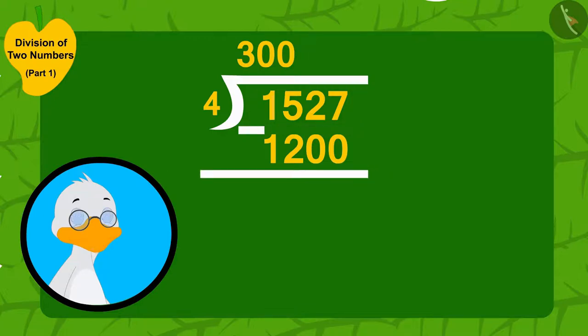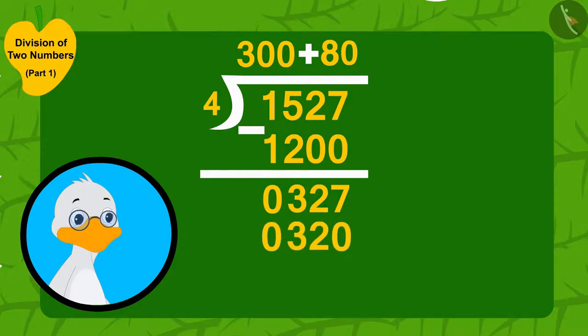Now, I have three hundred and twenty-seven mangoes left. If I distribute these three hundred and twenty-seven mangoes in groups of four, then I can distribute these mangoes to 80 more people with each of them getting four mangoes.